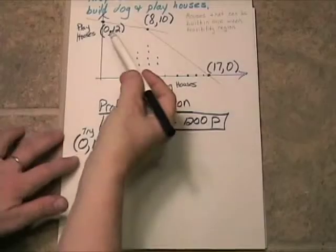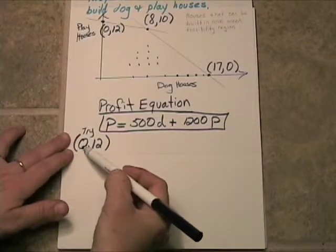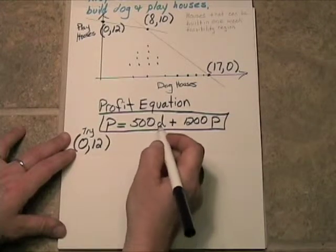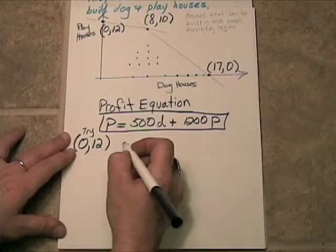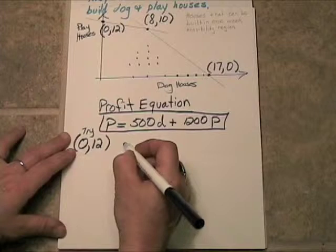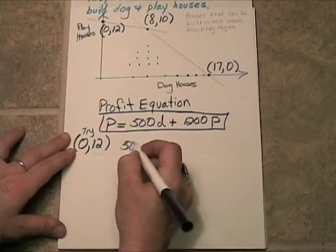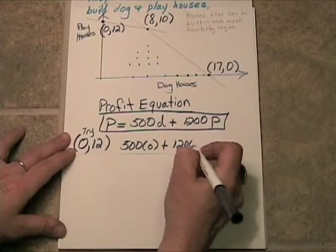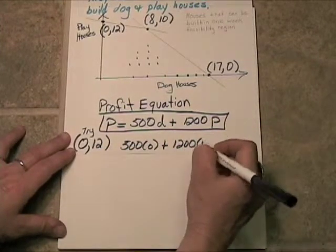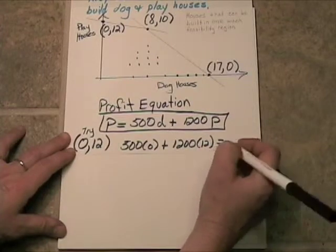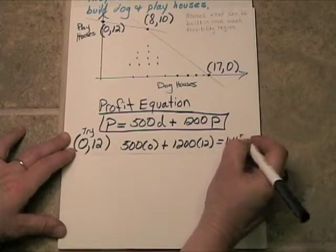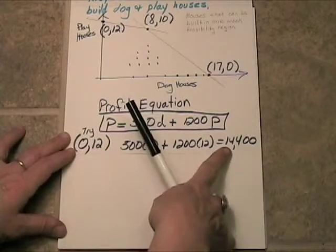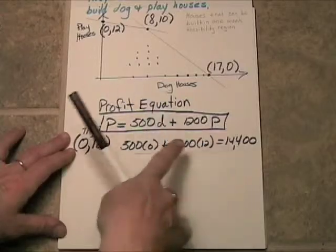Let's start with this one. Let's try no dog houses and 12 playhouses. We'd be making no dog houses. So our profit equation, we're going to have 500 times no dog houses plus $1,200 times 12 playhouses, which is going to give me, let's see, 12 times 12 is 144 with two zeros. So, with this option, she'll make $14,400 in one week.